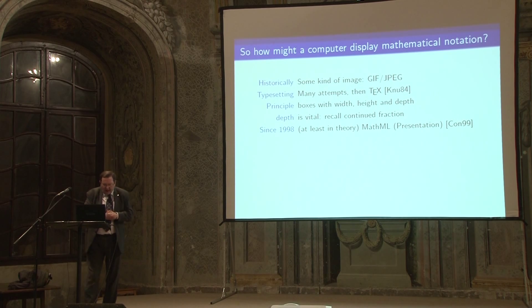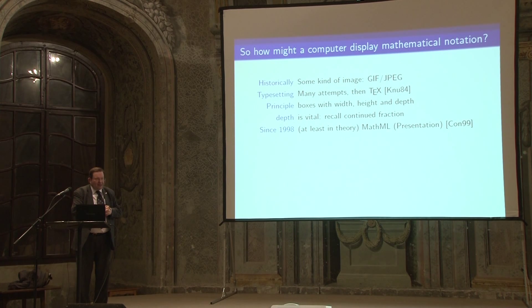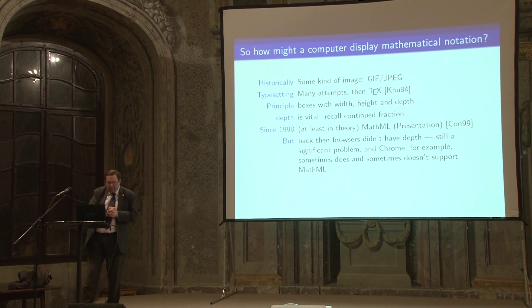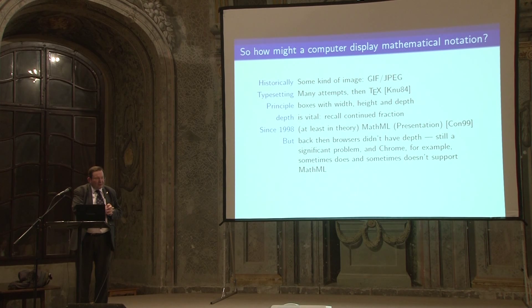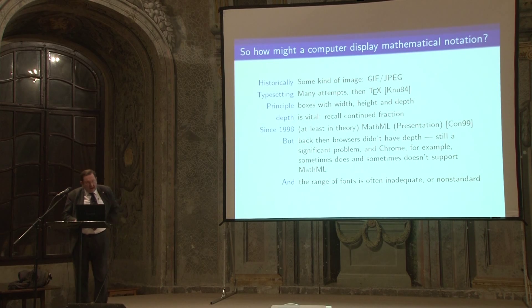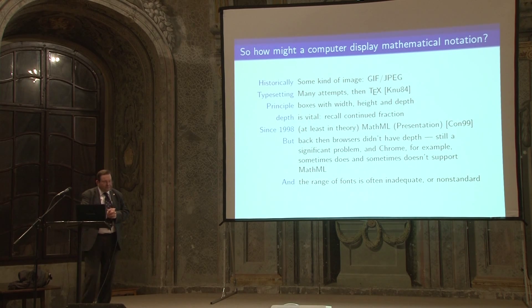Since 1998, MathML has been a World Wide Web Consortium standard for presenting mathematics on the web. But the problem was that browsers did not have the concept of depth — they have width and height but not depth — and that is still a problem today. For example, the Chrome browser, depending on the release, sometimes does and sometimes doesn't support MathML, because depth is a big extra piece of software. The range of fonts required is also often inadequate or non-standard.